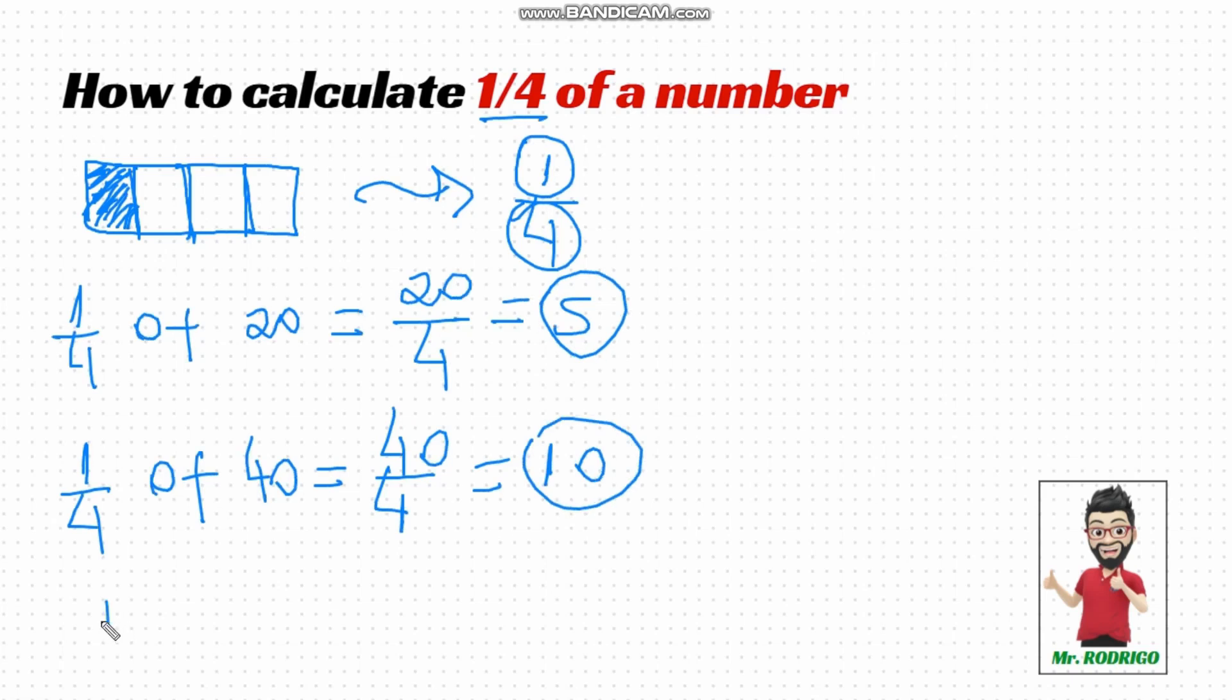What is one quarter of 100? Again, let's take 100 and divide it into four equal parts. 100 divided by four equals 25. So, one quarter of 100 is 25.